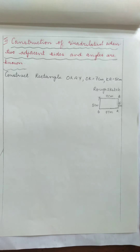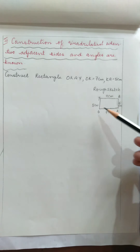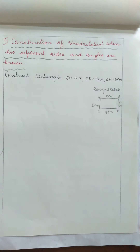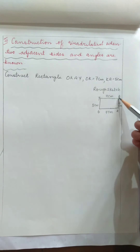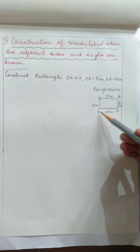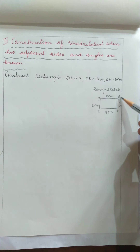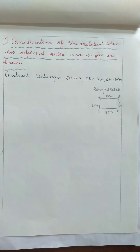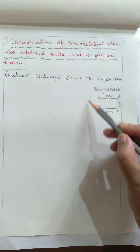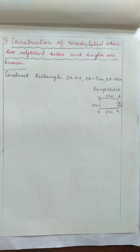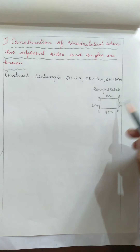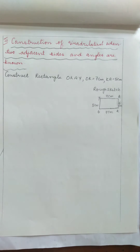In a rectangle, all angles are equal to 90 degrees. Therefore, all angles at O, angle K, angle A, and angle Y will be equal to 90 degrees. Based on these side measurements and using 90 degree angles, we need to construct the rectangle.